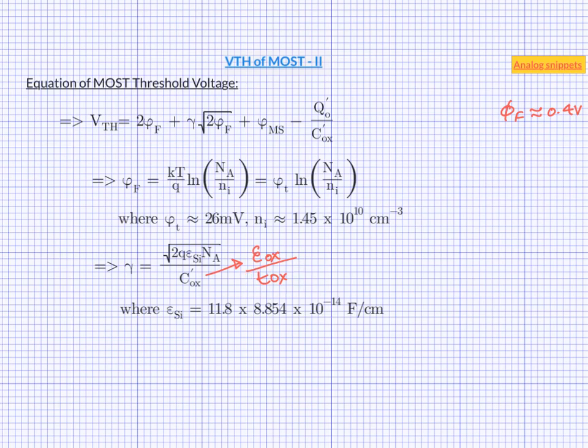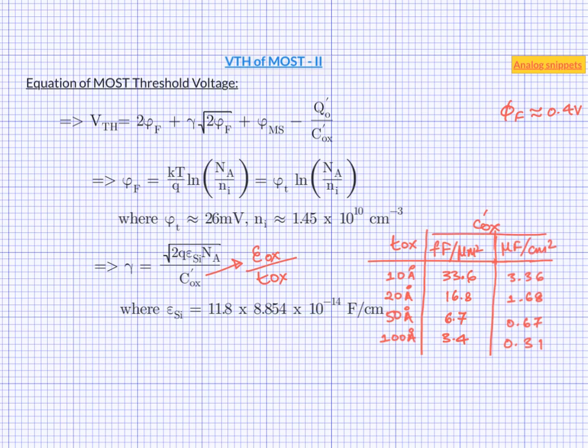Numerator is the relative permittivity of oxide and t ox is the oxide thickness. Oxide thickness is usually a few tens to few hundreds of angstrom or few nanometer. Let us calculate this oxide capacitance for a few values of gate thickness. Here we have calculated the unit gate oxide capacitance in two different units. First column is femtofarad per micrometer square, which is very useful during the designs because we size the devices in micrometers.